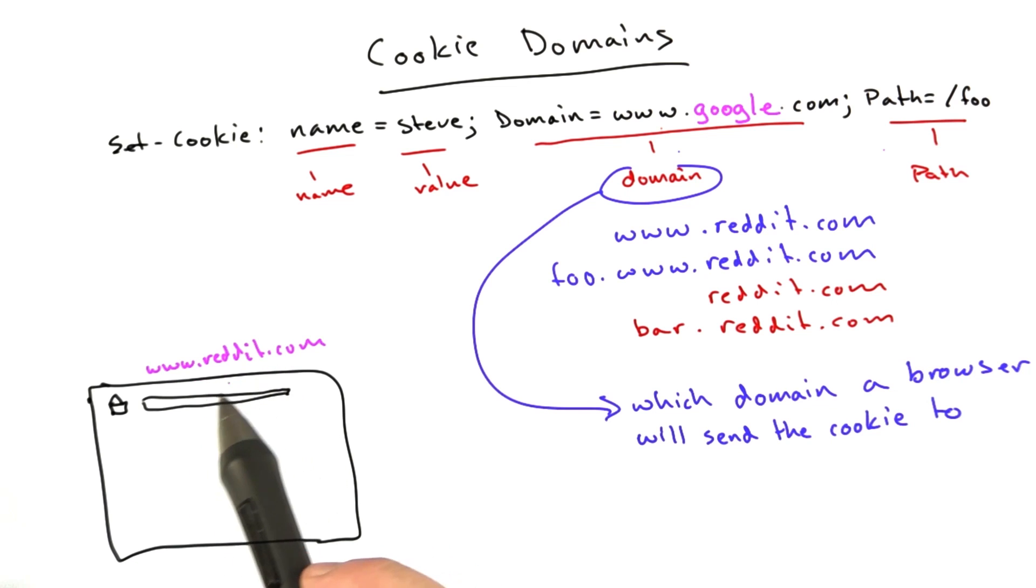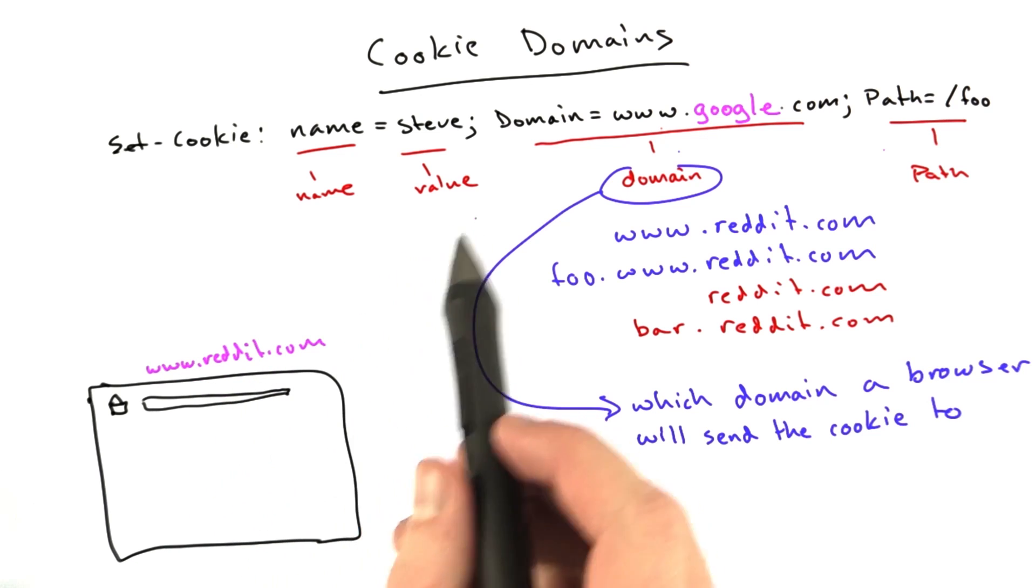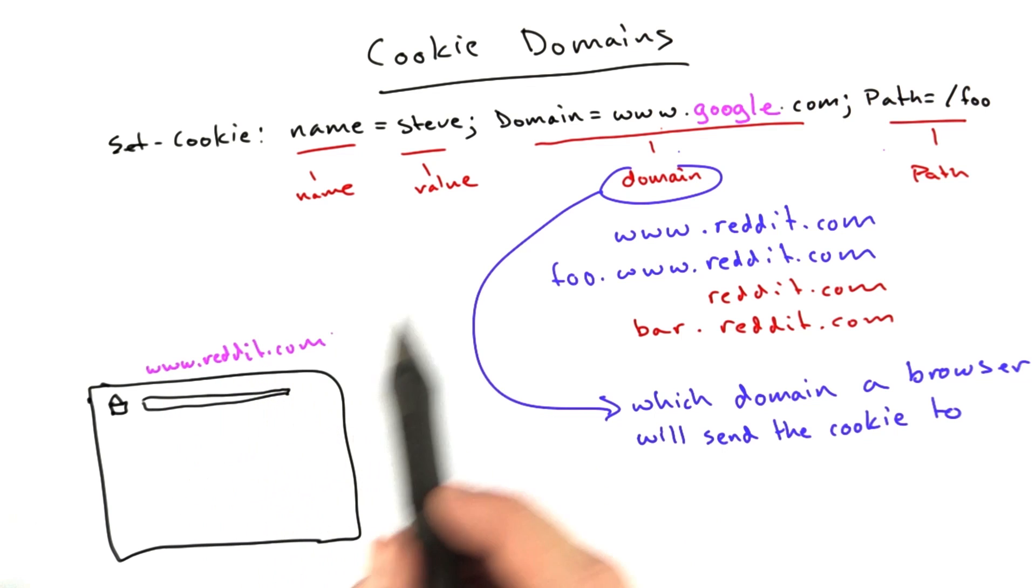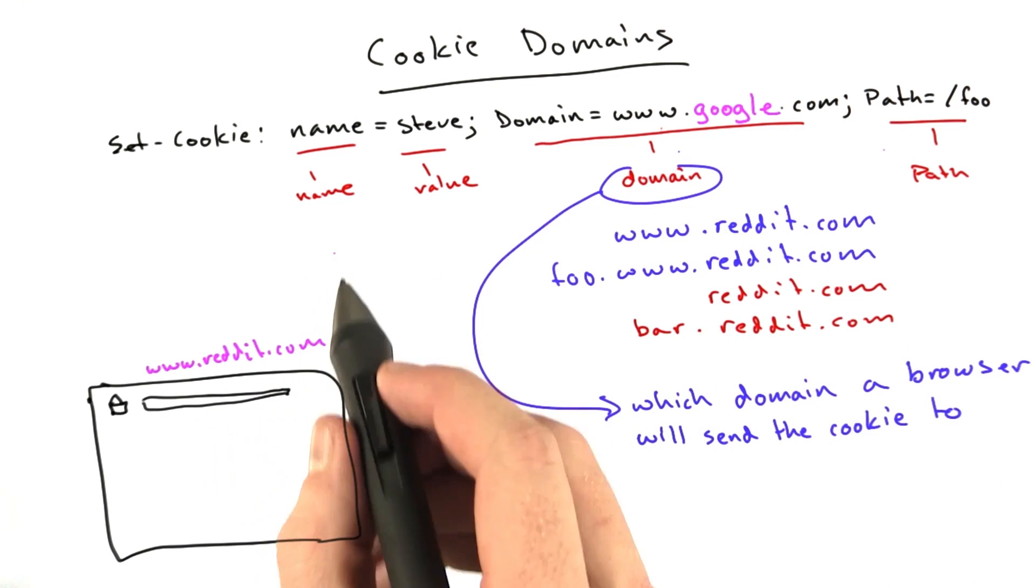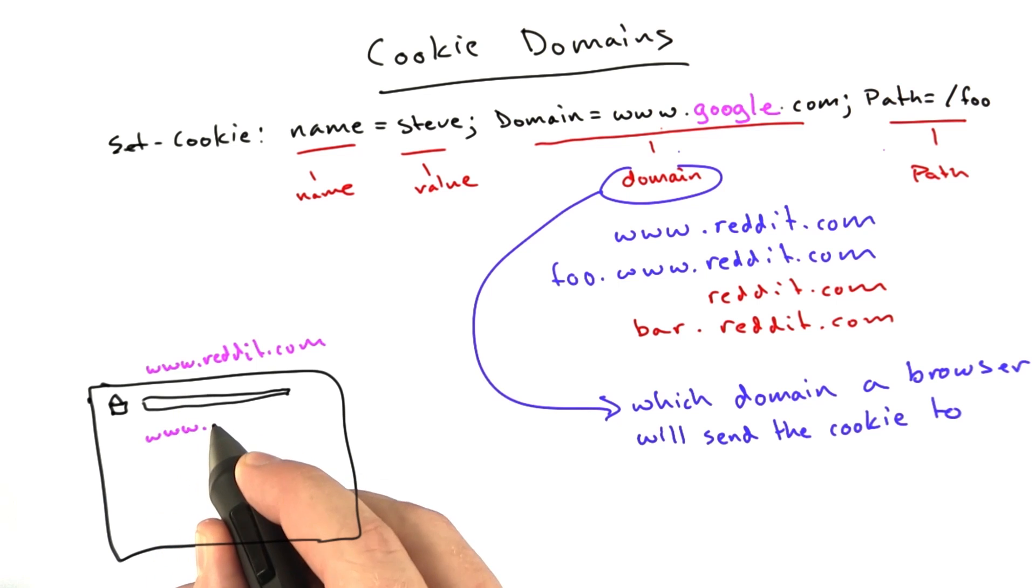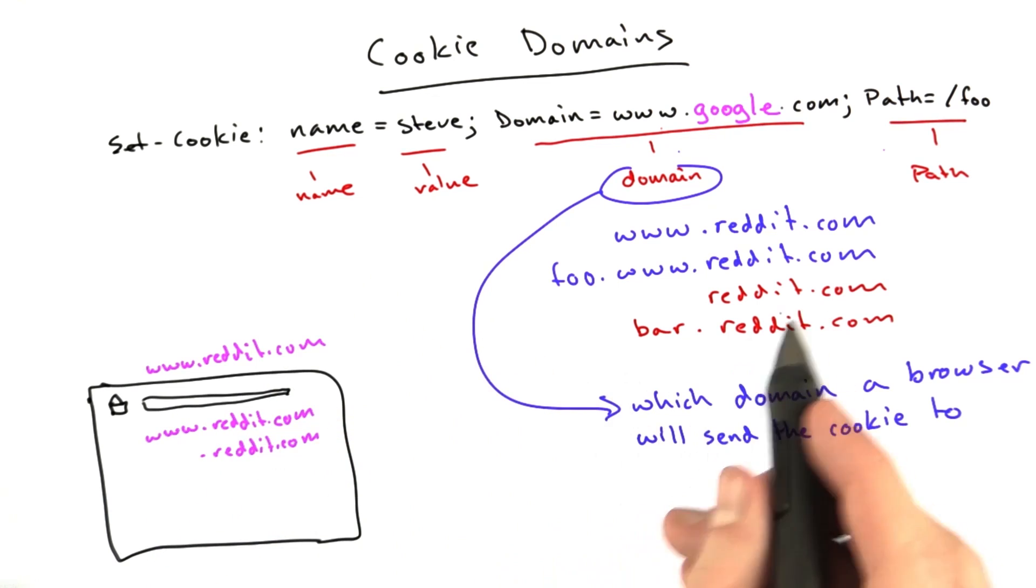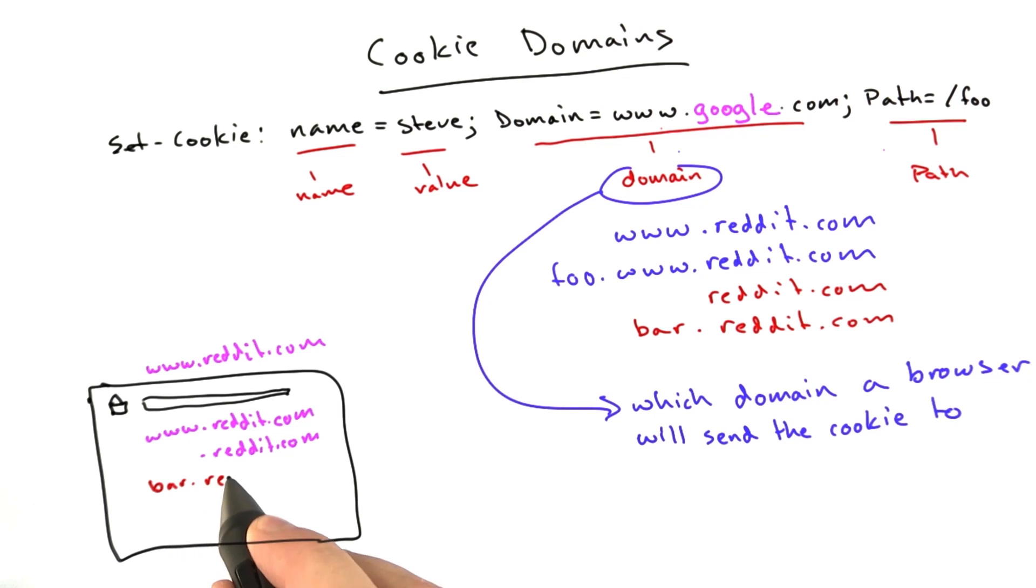So if we're at www.reddit.com, the browser will only accept cookies for, by default, www.reddit.com if there's no domain parameter. If there's a domain parameter, the only valid domains are www.reddit.com or reddit.com. We can't set a cookie for bar.reddit.com or foo.reddit.com, and this is to prevent...